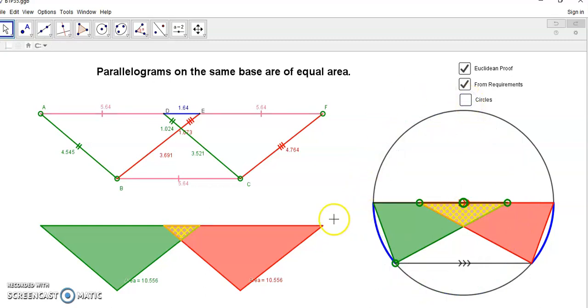So, that's what I wanted to talk about in Proposition 35. It's a very important proposition. The rest of the propositions are not really remarkable, except for the Pythagorean theorem, in which this proposition is used.